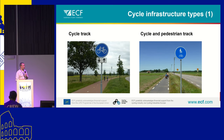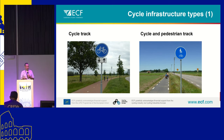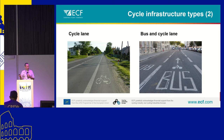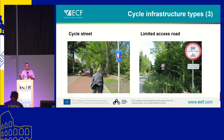These are the kinds of cycle infrastructure that we consider. We look for cycle tracks — dedicated, physically segregated from motor vehicles. Cycle and pedestrian tracks, which are the same but also shared with pedestrians. Cycle lanes, which have dedicated space for cyclists but separated only by a strip of paint. Bus and cycle lanes. Cycle streets, which can be used by motor vehicles but where cycling is somehow prioritized — what that means exactly depends on the country.